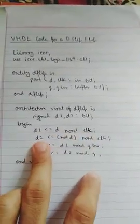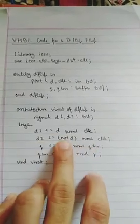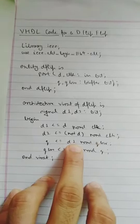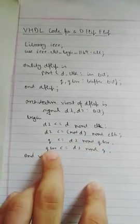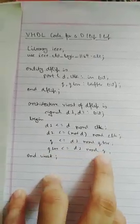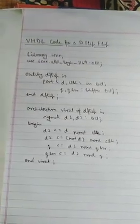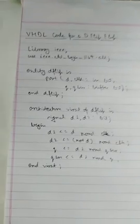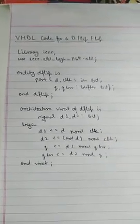Then there is D2. D2 is the NAND of NOT D and CLK. Then there is Q. Q is the NAND of D1 and Q bar. And finally Q bar which is the NAND of D2 and Q. That is the end of the architecture. So this is the VHDL code for DFLIP. Thank you for watching.